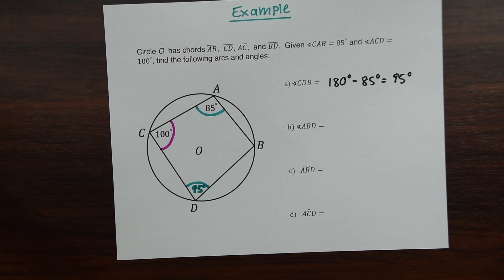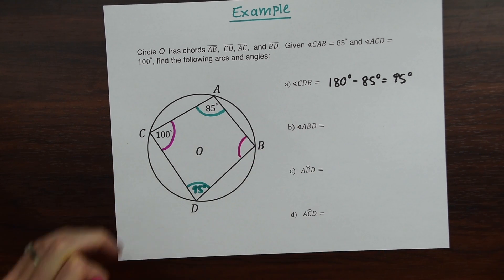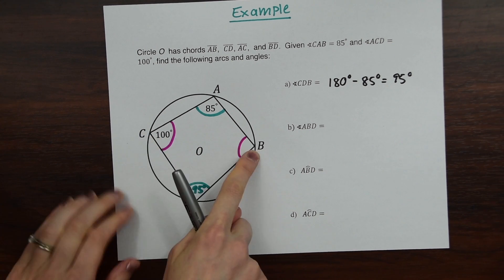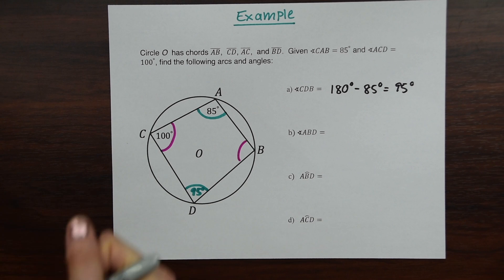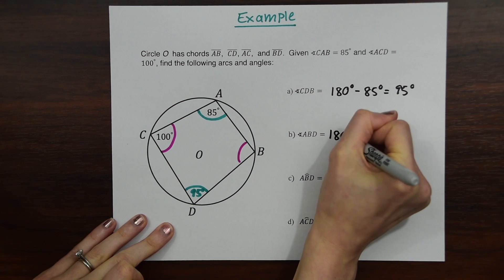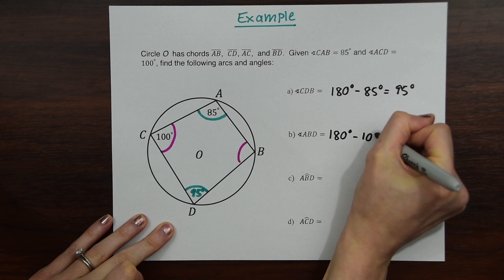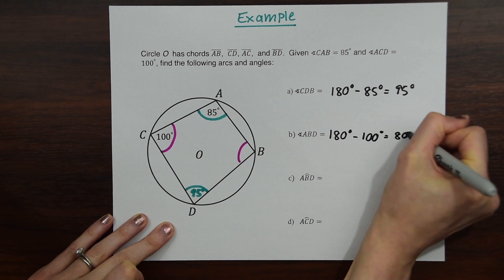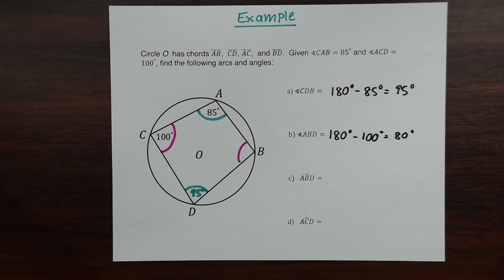Okay, next question, part B, we have angle ABD, this angle right here. And again, we're going to use that third theorem with quadrilaterals where the opposites are supplementary. So we're just going to take 180 degrees and then subtract it by the opposite angle, 100 degrees, which gives us 80 degrees. So that's the value of angle ABD. So let's just write that in.